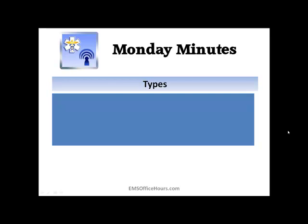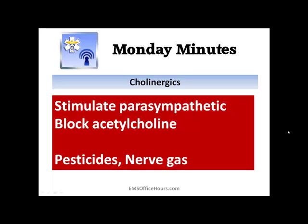Today we're going to talk about cholinergics and anticholinergics. Cholinergics are things that stimulate the parasympathetic nervous system — they block the breakdown of acetylcholine. Normally you're going to find these in pesticides; organophosphates are the most popular. And nerve gas — things like sarin gas or soman gas — that's where we're normally going to find this type of poison.